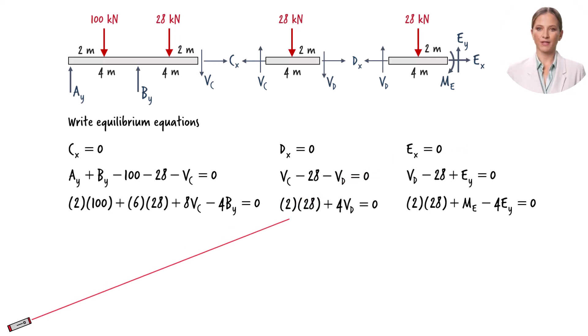Since this equation contains only one variable, we can use it to determine Vd. Substituting negative 14 for Vd in this equation, we can solve for Vc. Vc equals 14 kilonewtons.